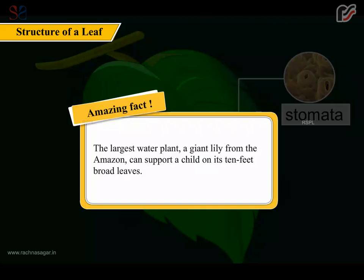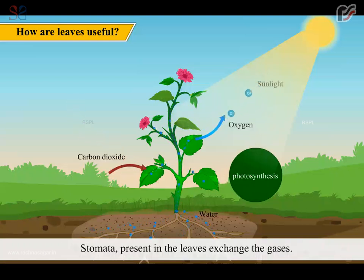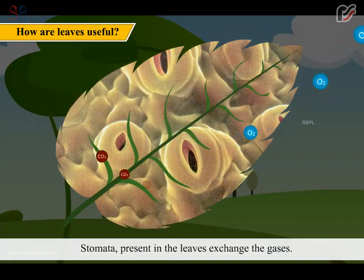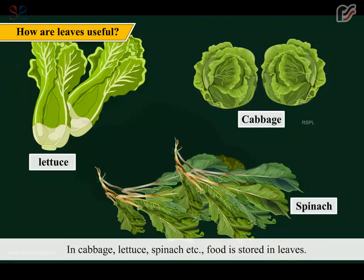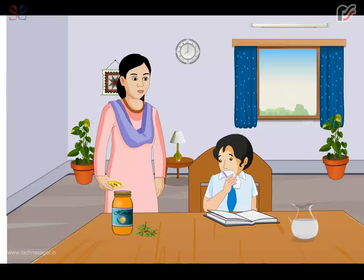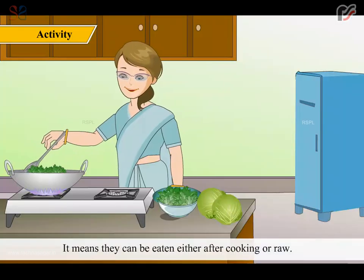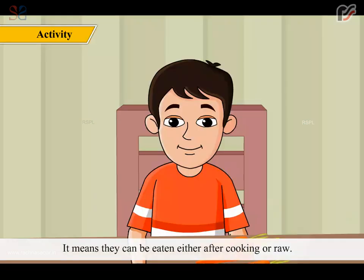Tiny pores present on the leaf surface are called stomata. Amazing fact: the largest water plant, a giant lily from the Amazon, can support a child on its 10-feet broad leaves. Leaves prepare starch during the process of photosynthesis. Stomata present in the leaves exchange gases. In cabbage, lettuce, spinach etc., food is stored in leaves. Tulsi leaves are used with honey for quick relief from cough. Many leaves are edible, meaning they can be eaten either after cooking or raw.